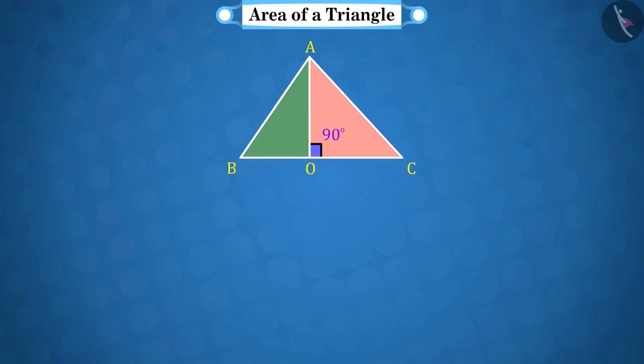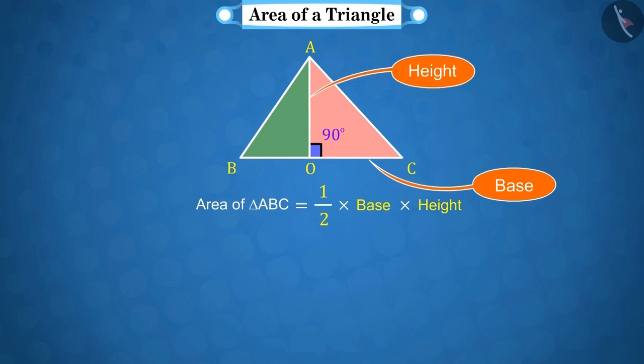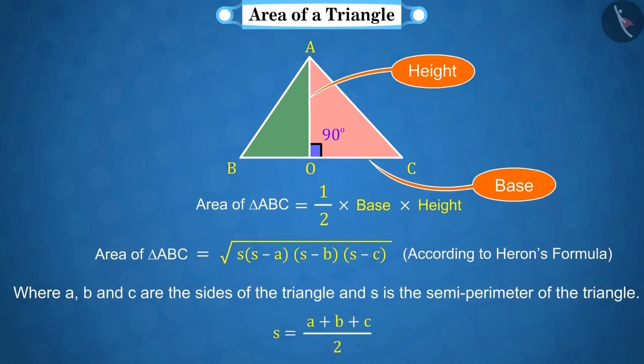Hope you remember that the area of a triangle is determined by the measure of its base and height. We learned in the previous class that if the values of height and base are not known, we can still find the area of a triangle using Heron's formula.